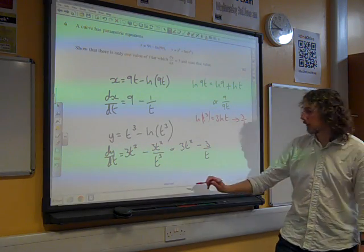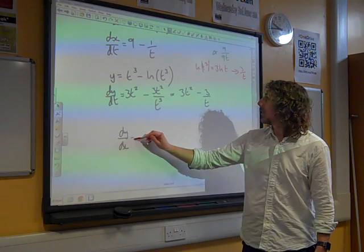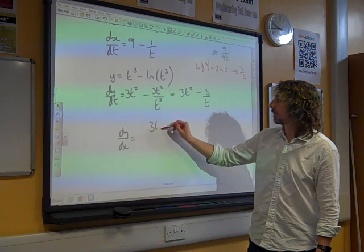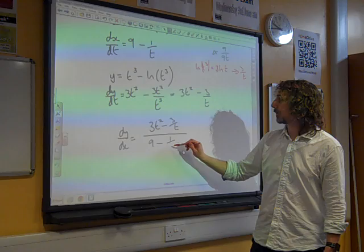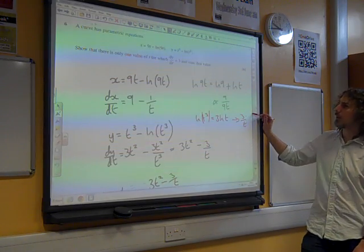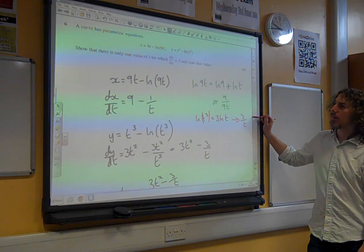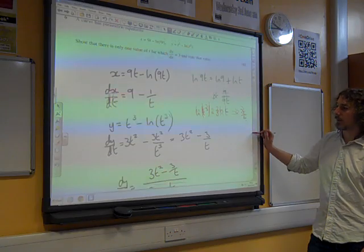We're supposed to be finding dy/dx. So dy/dx is this one divided by this one. And what did the question actually want? Show that there is only one value of t for which dy/dx equals 3, and state that value.